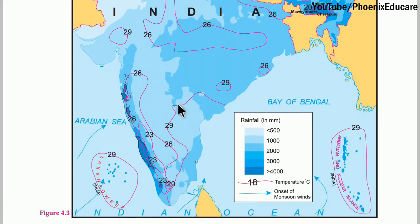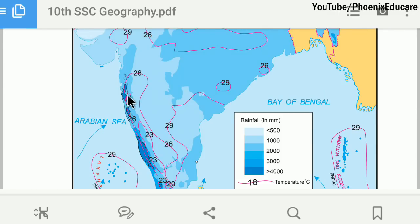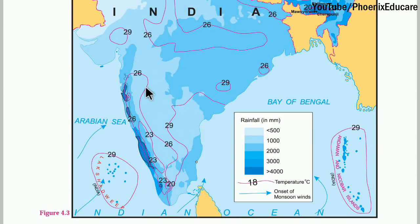This is the Maharashtra Plateau. As mentioned in the first part, the Maharashtra Plateau is getting less rainfall because this is the leeward side of the mountain. We will now see how orographic rainfall is happening in Maharashtra and other parts of India.